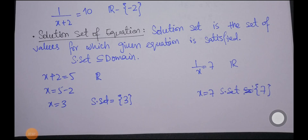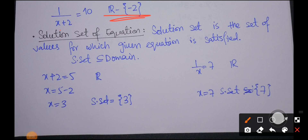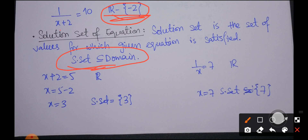Next, we have the solution set. The solution set is the set of values for which the given equation is satisfied — meaning when that value is substituted, the left-hand side equals the right-hand side. First we define the domain, then find the particular value that satisfies the equation. The solution set must be a subset of the domain. Domain plays a very important role in defining a correct solution set.